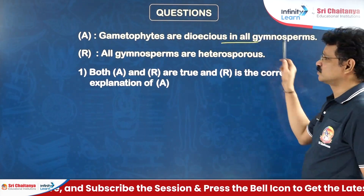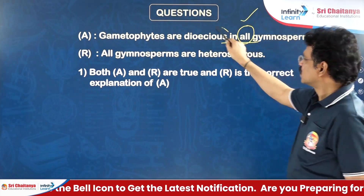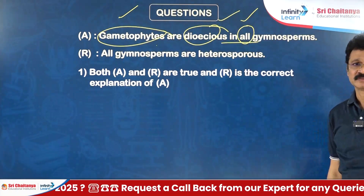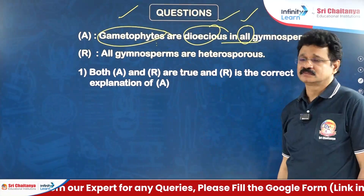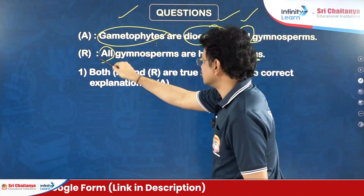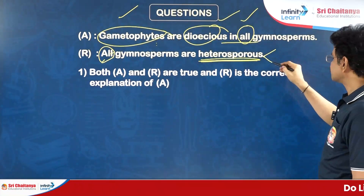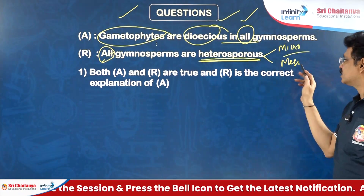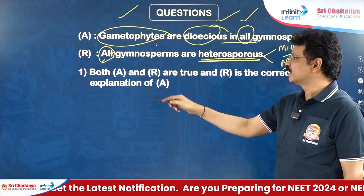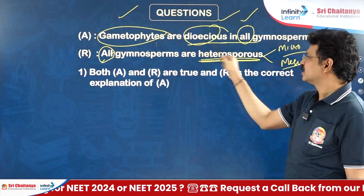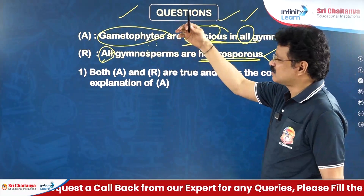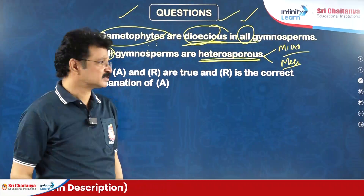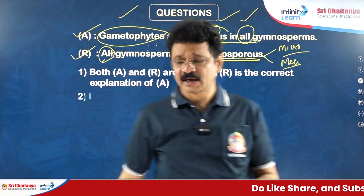Next question: Gametophytes are dioecious in all gymnosperms. Statement is true. Because in all gymnosperms the sporophyte is heterosporous, producing two types of spores — microspores and megaspores. Microspore is the first cell for male gametophyte development; megaspore is the first cell for female gametophyte development. So male and female gametophytes are physically separate — dioecious. Not only in all gymnosperms but in all angiosperms also, gametophytes are always dioecious. Assertion true, Reason true, and Reason is the correct explanation — first option.